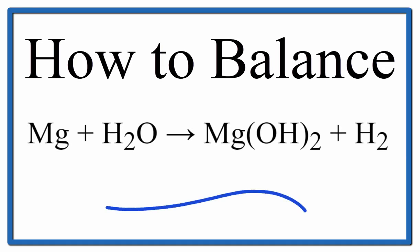To balance this equation, magnesium plus water yields magnesium hydroxide plus hydrogen.